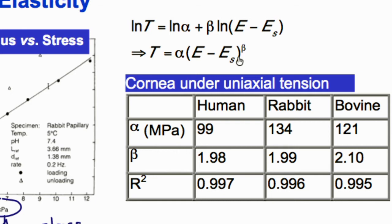Values of α and β and the correlation coefficient indicate how well this relationship fits the data for human, rabbit, and bovine cornea. In each case, β is very close to 2, so the stress-strain relationship for the cornea is well approximated by a quadratic — which is certainly not the case for cardiac muscle, skin, or tendons and ligaments.